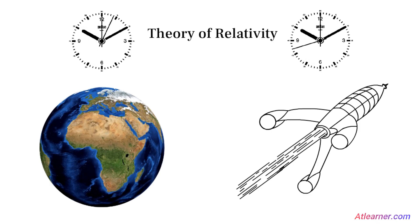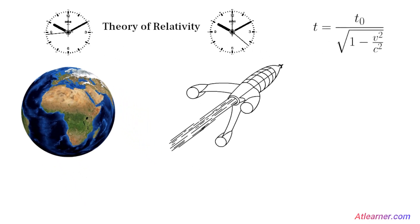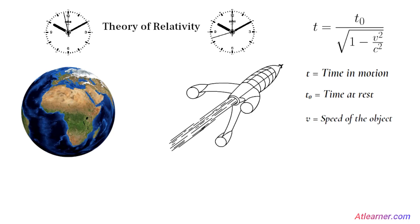This variation of time in relative motion can be measured using this formula: T equals T₀ divided by the square root of 1 minus V squared divided by C squared, where T is the time in motion, T₀ is the time at rest, V is the speed of the object, and C is the speed of light in the vacuum.